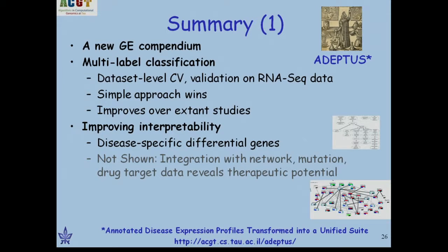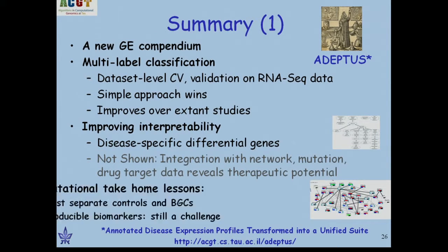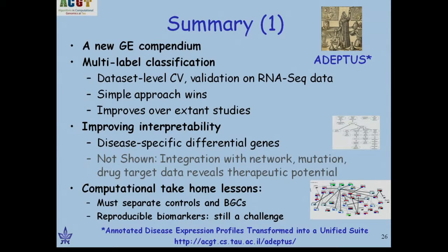To summarize the first part: we created a new gene expression compendium. We used multi-label classification with dataset-level cross-validation and got good validation results on RNA-seq data. Simple approach wins — SVM outperforms multi-label algorithms. Interpretation is improved using this compendium by identifying disease-specific differential genes. Computationally, two take-home lessons: separating controls and background is critical when analyzing multi-disease data, and reproducibility is still an issue — we need even more data.